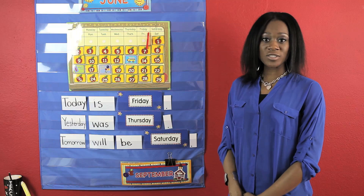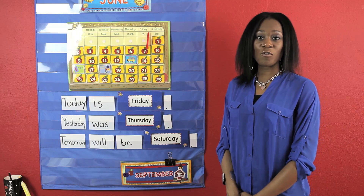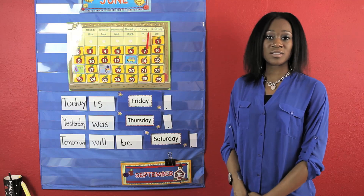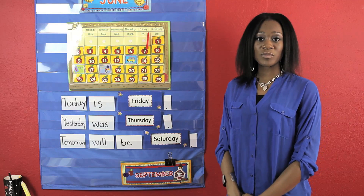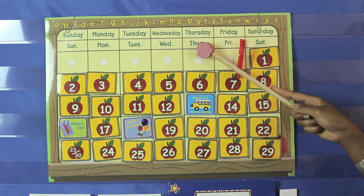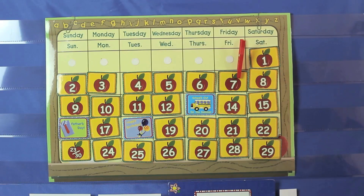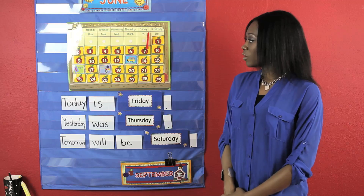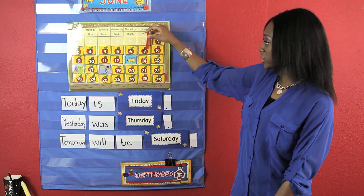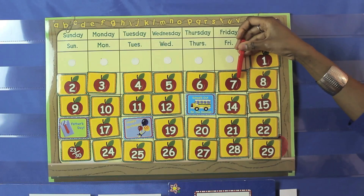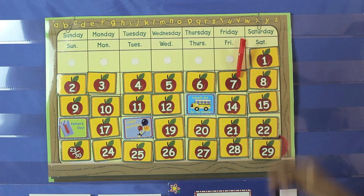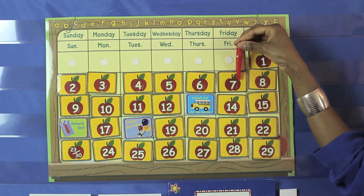Preschoolers start to learn time in the form of the days of the week as well as the months of the year. You can do this by showing them how to read a calendar. First off, you want to start off by marking each day using a special object. Here I use a red clip.